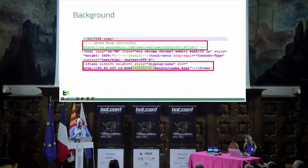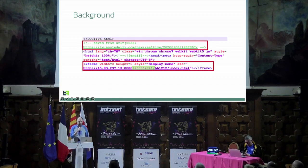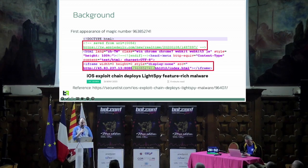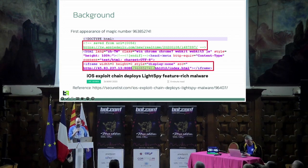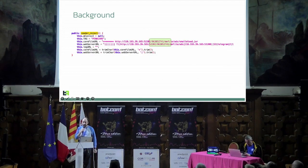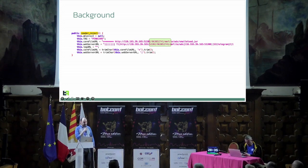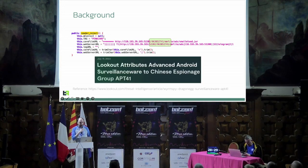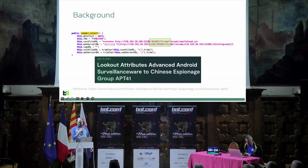The first appearance of that number is as part of the URL path for the exploit for iOS. It was first published by Kaspersky a long time ago — it's about iOS malware, really interesting and quite complicated. We got a second appearance of that number with another payload inside, called smallmload.jar. This was posted by Lookout last year and they attributed this loader to APT41.